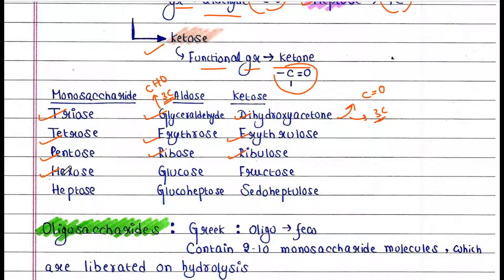When it is hexose, the aldose would be named glucose. The ketose would be named fructose. And when it is heptose, the aldose would be named glucoheptose and the ketose would be named sedoheptulose.